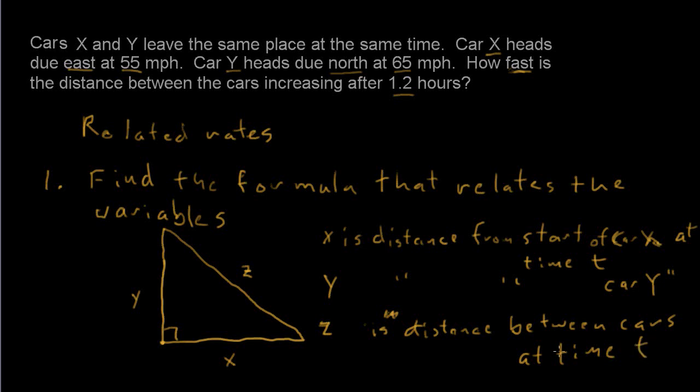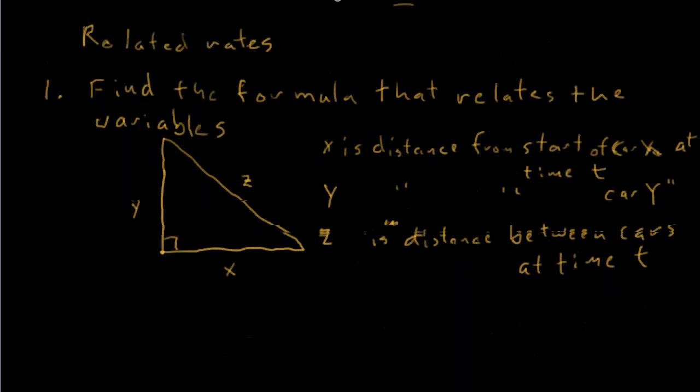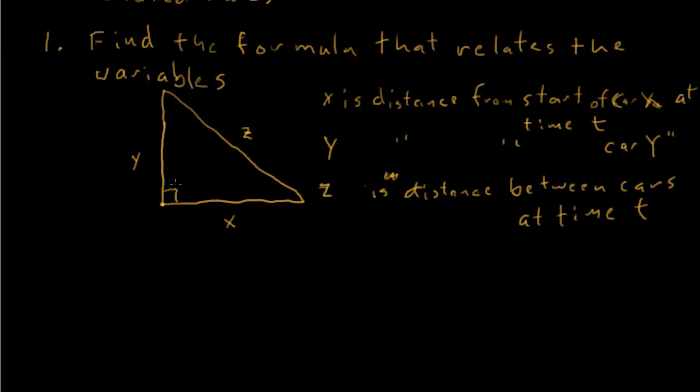Now we still haven't made up a formula that relates the variables, but we can do that easily here because we have a right triangle, and what is the formula that we have for right triangles that relates the sides and the hypotenuse? The Pythagorean theorem. And that is stated that one of the legs squared plus the other leg squared, in this case x squared plus y squared, equals the hypotenuse squared, equals z squared. So we have a formula that relates the variables.